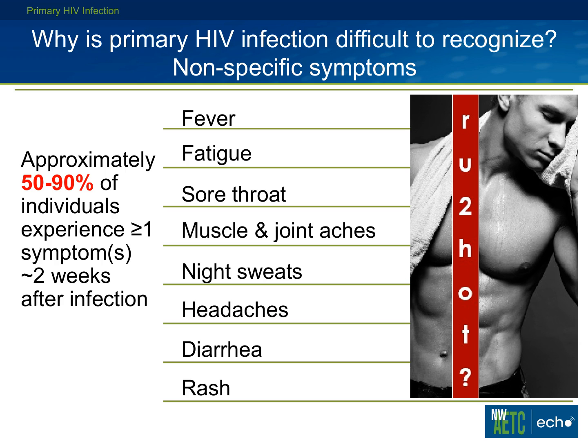Very few people get diagnosed with acute HIV the first time they seek care. A few years ago we developed an education campaign you can still find at www.ru2hot.org. It's a simple website giving basic information, and we tried to teach HIV-negative men who have sex with men in Seattle the signs and symptoms so they would recognize them and seek a specific test, saying 'I think I have acute HIV infection.'